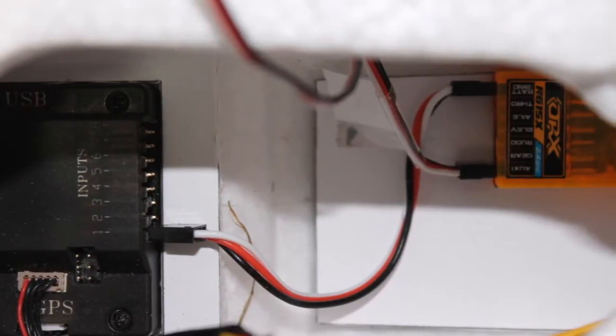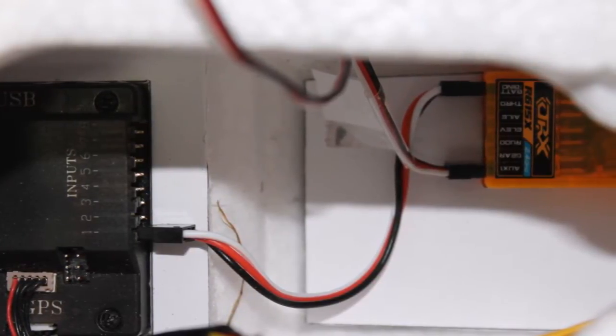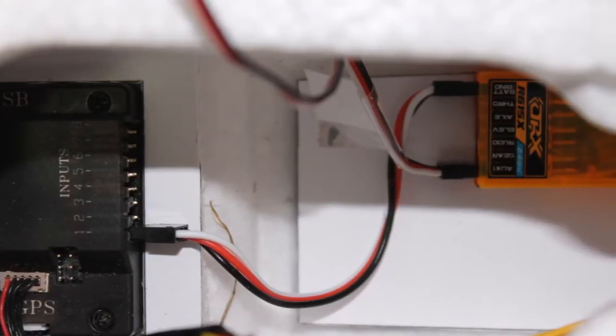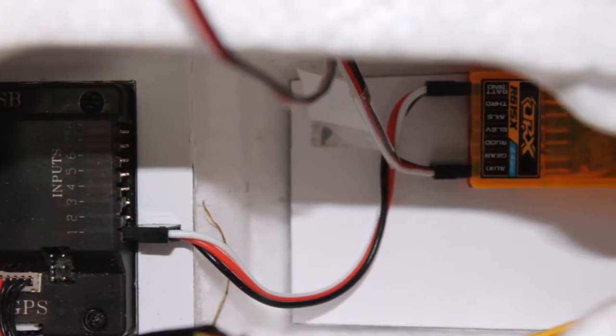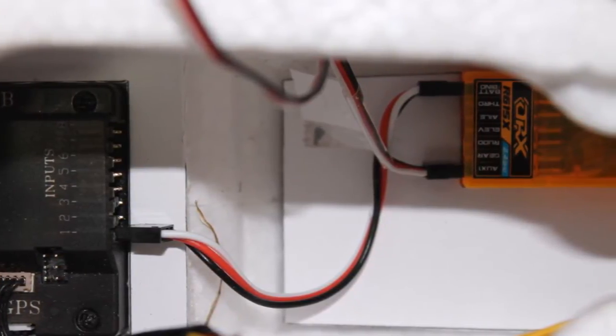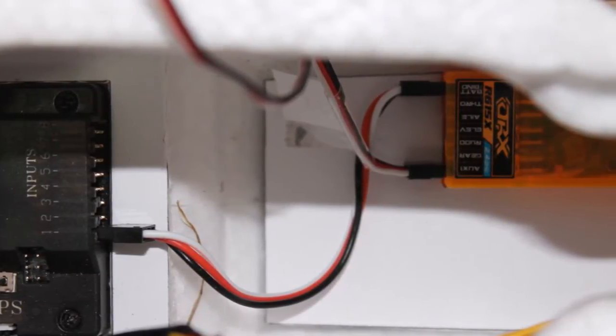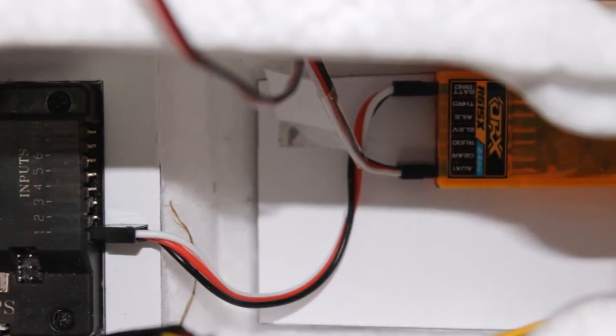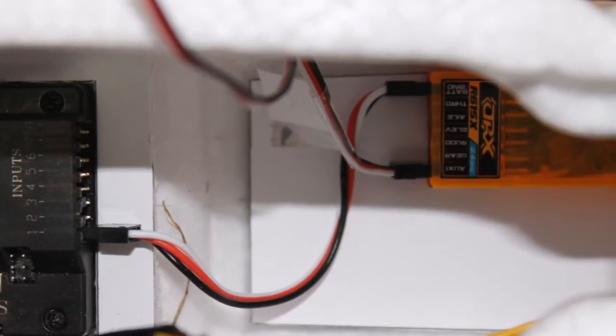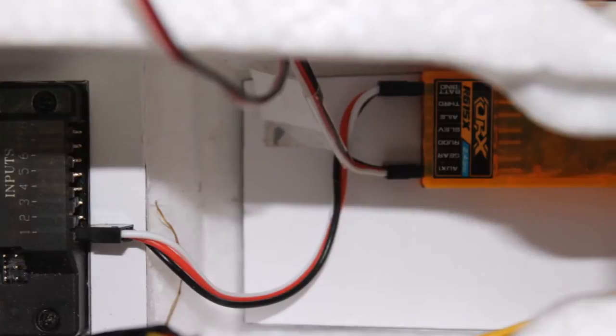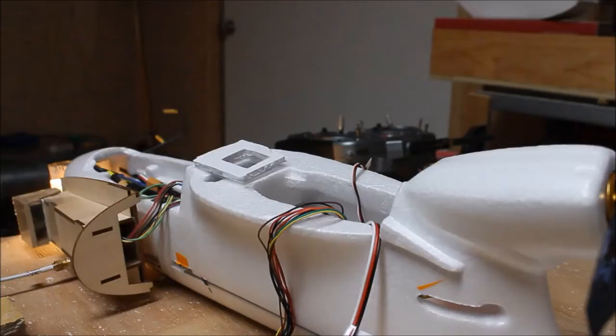Both are held in position with cradles cut from 5mm foam board. The foam cradles are held in place with 3M spray-on contact adhesive. The receiver to APM communication is handled through a single CPPM connection. This maximizes the distance between the receiver and the video transmitter.